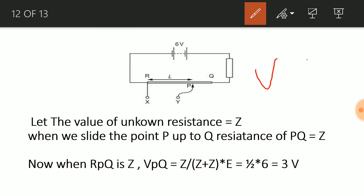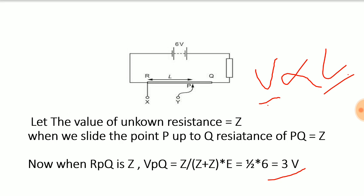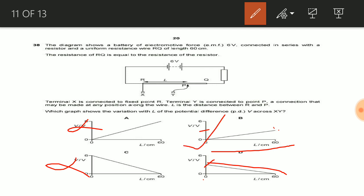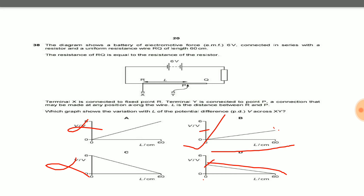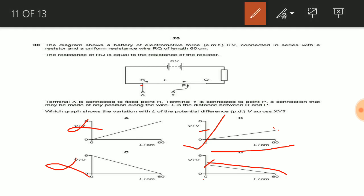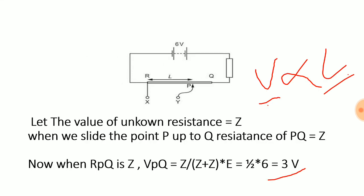We know the principle of the potentiometer: voltage increases proportionally with length. Looking at the diagrams, the maximum voltage should be 3 volts and it should increase linearly. One option shows maximum 6 volts, another shows 3 volts but decreasing, and option B shows maximum 3 volts with an increasing relationship. Since our maximum is 3 volts and the voltage increases from 0 at P to 3 volts at Q, option B is the correct answer for question number 38. Thank you very much.